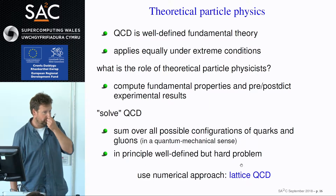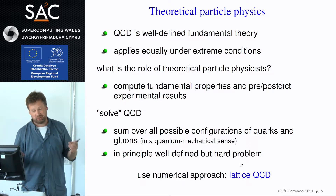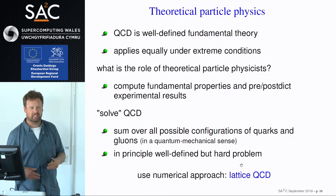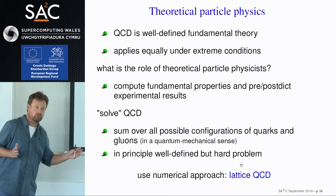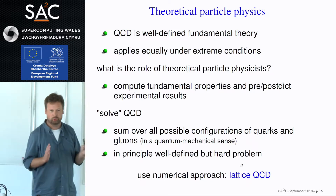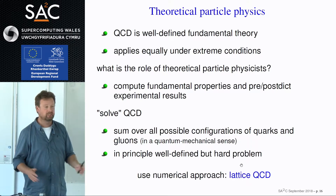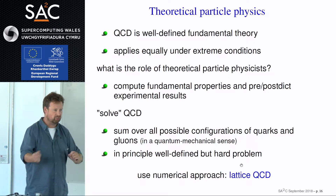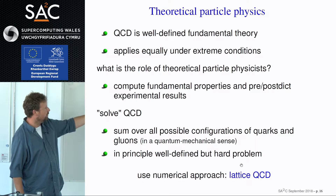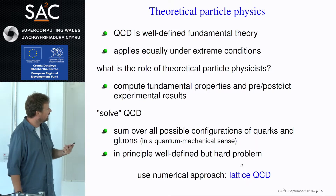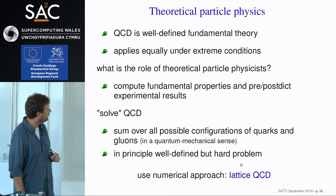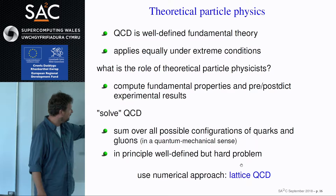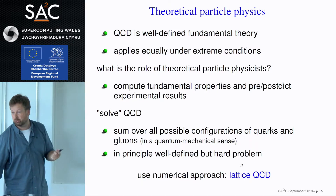As a particle theorist, we have to contribute to these experiments — compute things of interest for the experiment and test how QCD performs compared to the data. This is a very clean-cut process because QCD is a very well-defined theory. The rules in QCD are mathematically sound, everything is under control — there's no wiggle room. It's a well-defined theory that should apply equally well under extreme conditions. The fact that we're working at very high temperature changes the nature of the matter from hadrons to quarks, but the rules are the same. We just have to compute fundamental properties of the theory and then predict or post-dict experimental results.